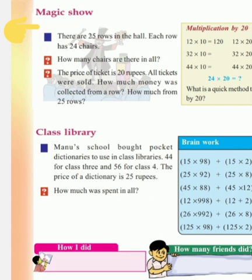Okay, now let us read the question: 'Magic Show.' There are 25 rows in the hall. Each row has 24 chairs. How many chairs are there in the hall? The second question: the price of a ticket is 20 rupees. All tickets were sold. How much money was collected from a row? How much from 25 rows?